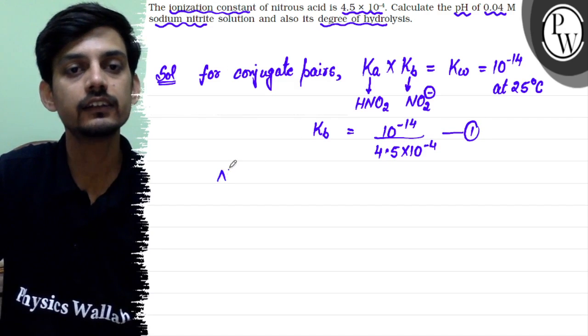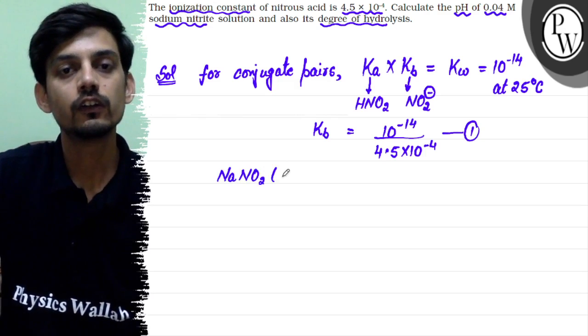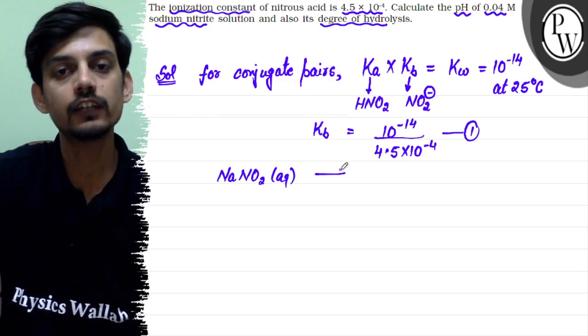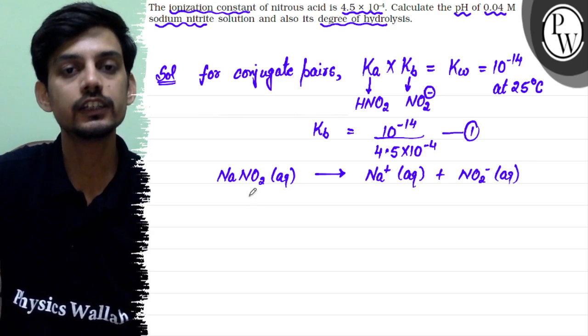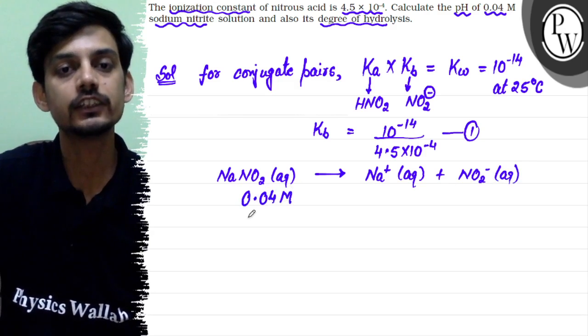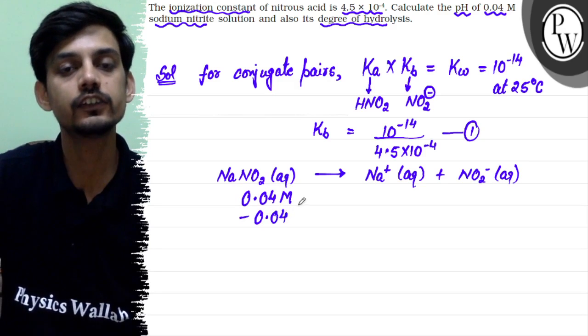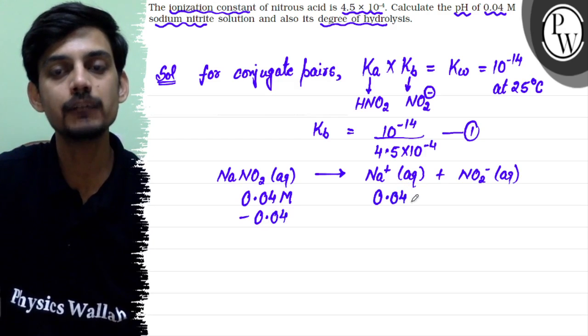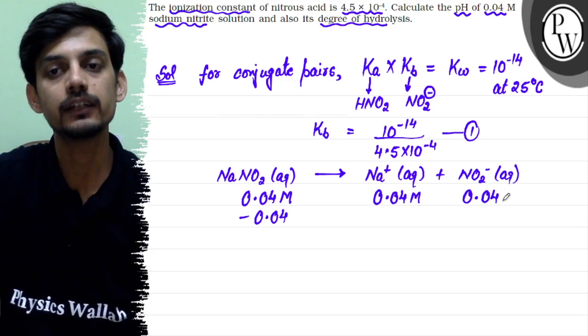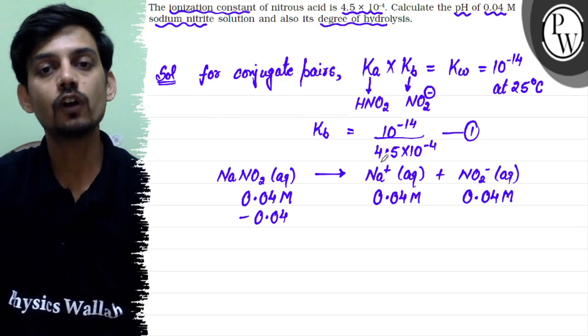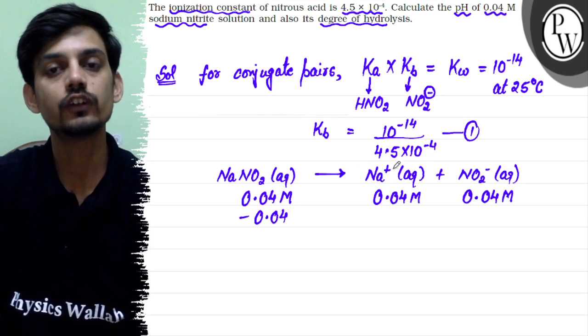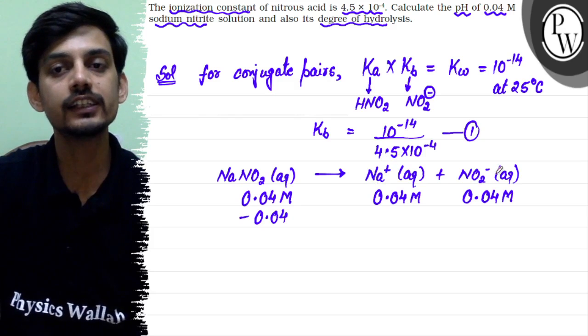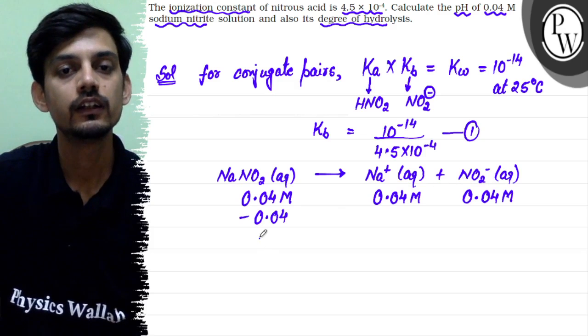Now we have sodium nitrite solution NaNO2. This solution, because salt is strong electrolyte, it is at a given concentration of Na+ ion and the same concentration of nitrite. As we know, strong electrolyte and strong acid or strong base ions don't hydrolyze because they are weak conjugate pairs. So Na+ doesn't hydrolyze, but NO2- will hydrolyze.